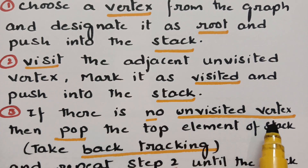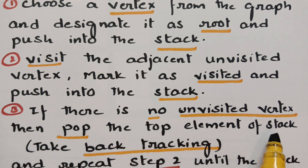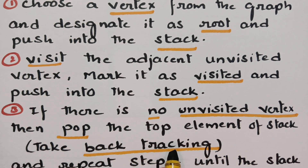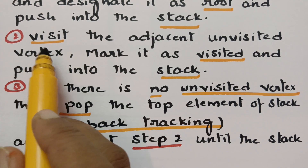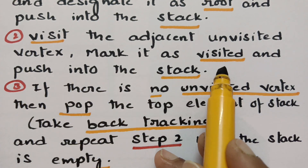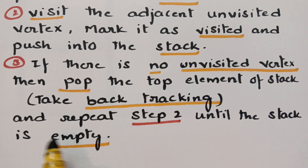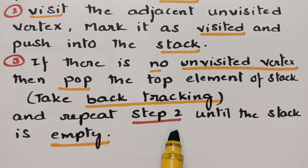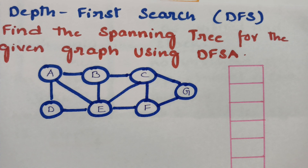If there is no unvisited vertex, then pop the top element of the stack — that is backtracking. Then repeat step 2: visit the adjacent unvisited vertex, mark it as visited, and push it into the stack. We repeat step 2 until the stack is empty. This algorithm will be very clear after looking at this example.